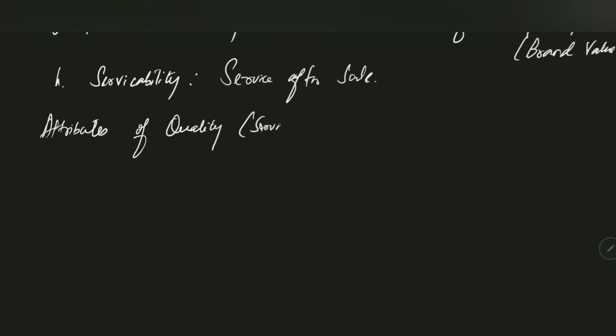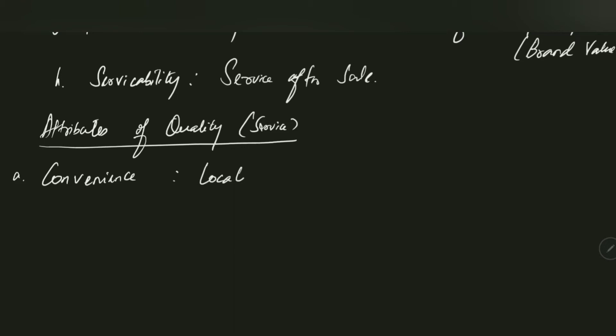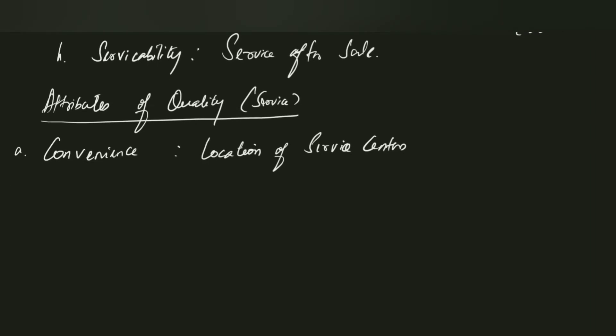Now, moving to the attributes of quality for services. The first one is convenience — the location of the service centers. Before purchasing a product, customers want to know where service centers are located. If service centers are far away and not easily accessible, it becomes a problem. So convenience for customers to reach service centers is very important.